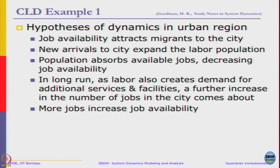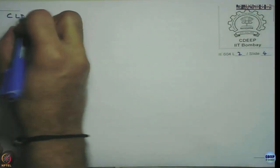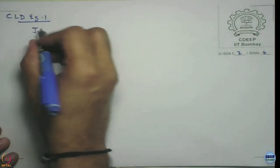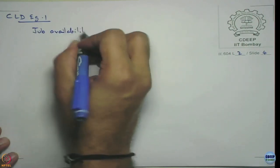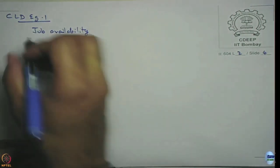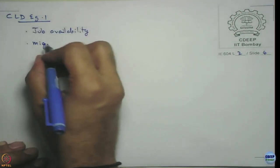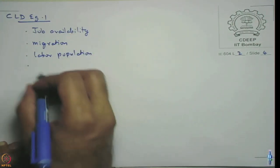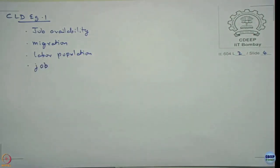In the long run, labor also creates demand for additional services — as more labor comes, new shops open and new services have to be offered. After a long term, that will increase the number of job availabilities within the city. So we identify four variables: job availability, migration, labor population, and jobs. Using these, let us create our first causal loop.